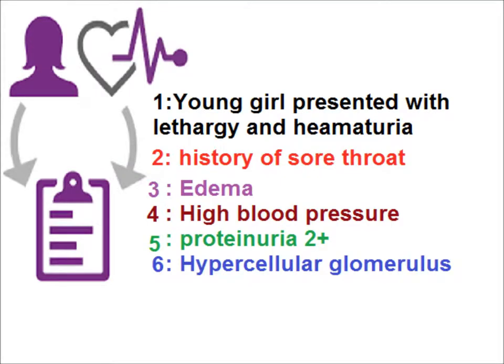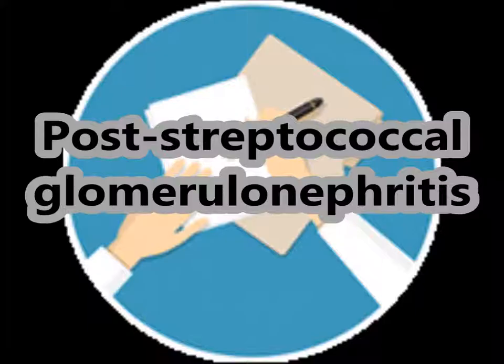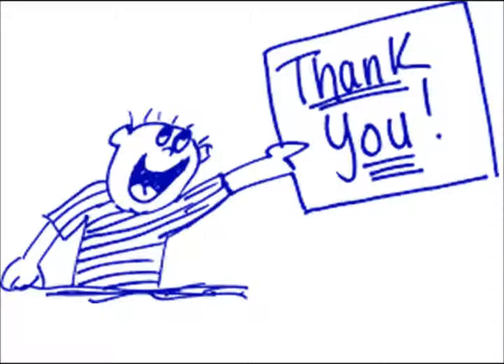So, combining the clinical data with the biopsy report: a young girl presented with lethargy and hematuria, history of sore throat, edema, high blood pressure, proteinuria, and a hypercellular glomerulus. We will diagnose the case as post-streptococcal glomerulonephritis. Thank you for watching the video.